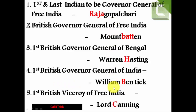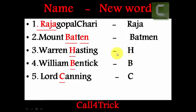So if you ask the questions, the answers highlighted in red color are: Raja, Bat, H, B, C. If you trick the red color words, you can remember the answers. The mnemonic is: Raja Gopala, Raja — representing Rajagopalchari.